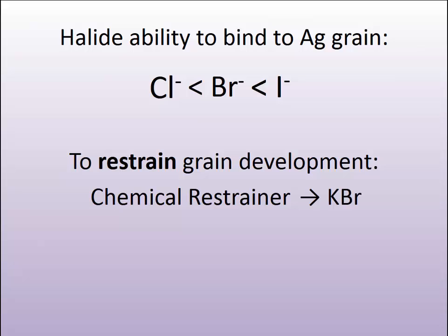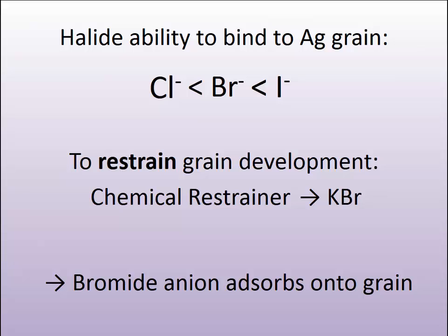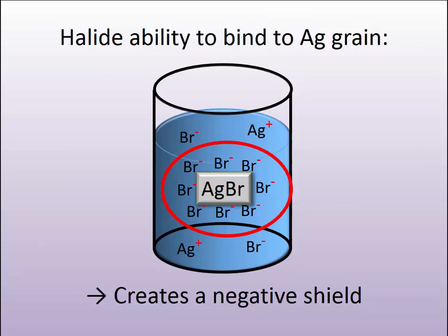It's almost always potassium bromide. This is because silver bromide tends to be the key halide component used in 20th century products, both photographic films and papers. We will tend to want to restrain the photographic development process by using a bromide ion, because the bromide anion will adsorb onto the grain and create a negative shield around the silver halide grain, making the grain net negative in charge on its surface. These surface properties are very key to photographic development.